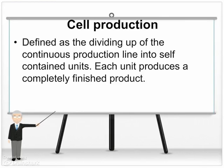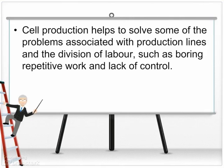Cell production helps to solve some of the problems associated with production lines and the division of labor, such as boring, repetitive work and lack of control. Cell production results in teams being empowered with the ability to decide on targets and the approach they should take to the task, giving them back control and improving their motivation.